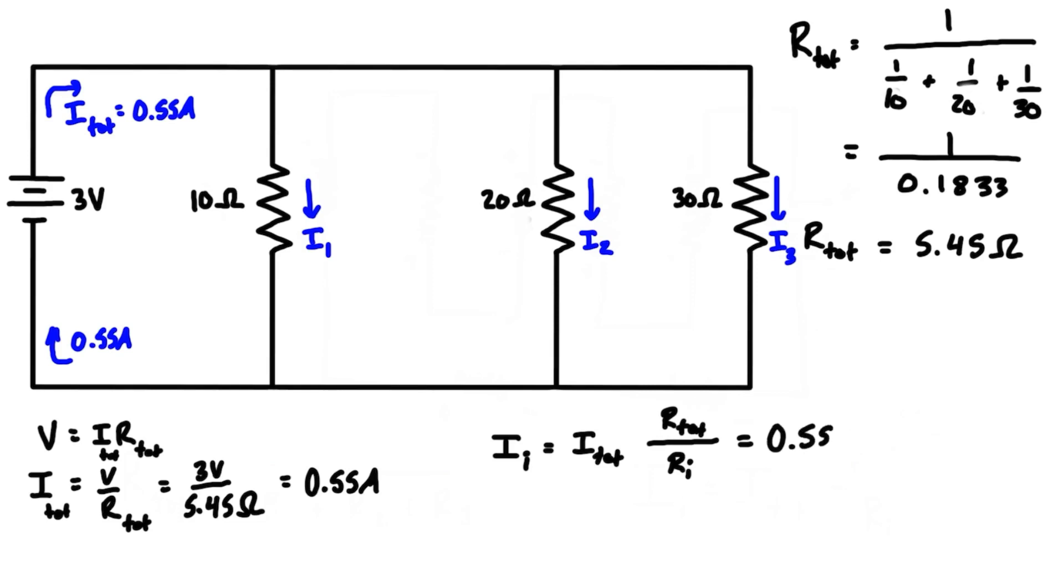I_tot equals 0.55 amps. Let's put this all in brackets and multiply it by this ratio where we have R_total on the top, so that's 5.45 ohms. Let's plug in resistor one here, so that is the 10 ohm resistor. Let's write and label these to be super clear: this is R1, this is R2, and this is R3. So i1 is just 0.55 times 5.45 divided by 10, and that gives us a value of 0.30 amps. For resistor 2, we can just update this value, so we have 20 ohms on the bottom, and we find that i2 equals 0.15 amps.